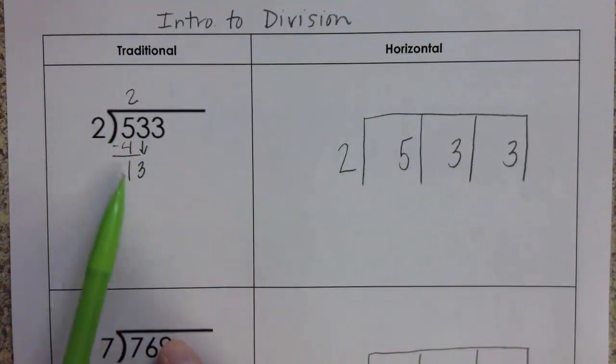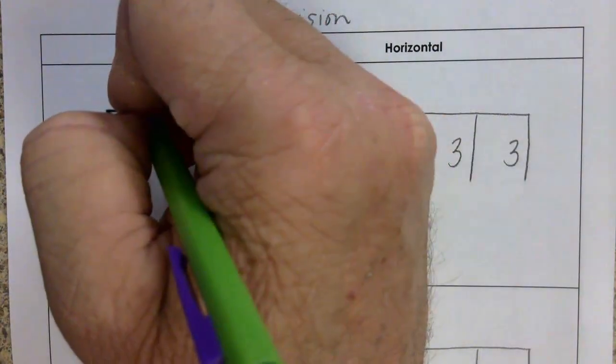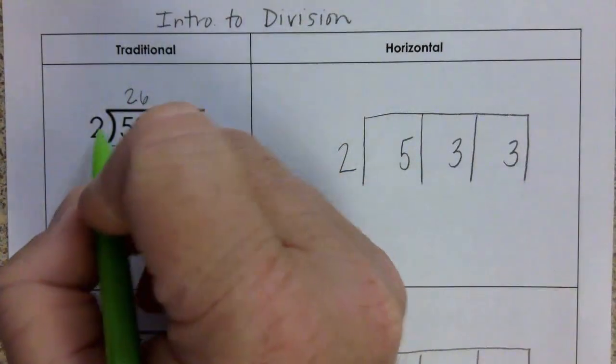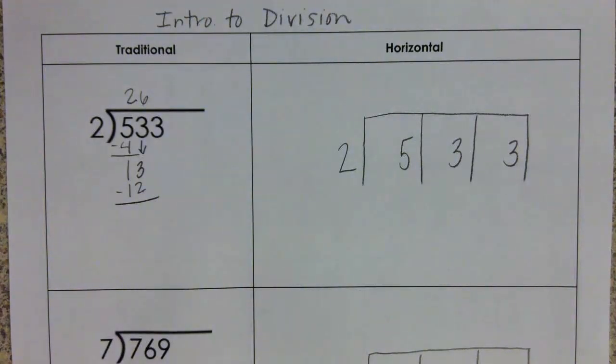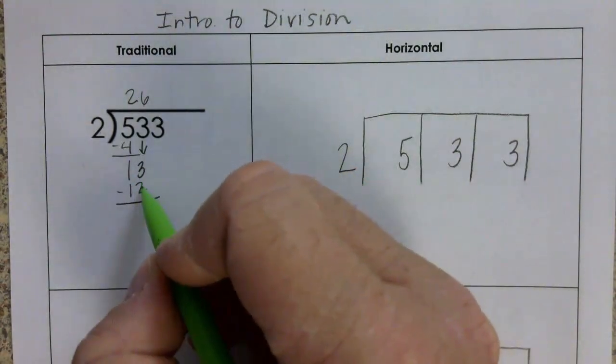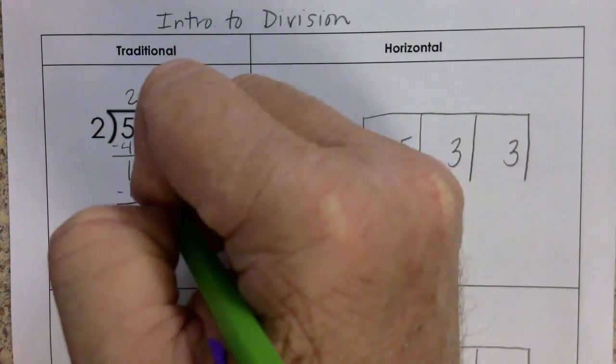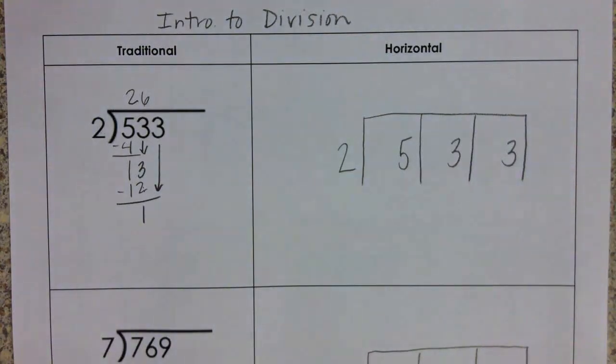Now we're looking at how many times can 2 go into 13 evenly. It can go in 6 times. 6 times 2 is 12. Again, we're going to subtract. 13 minus 12 is 1. Bring down that 3.